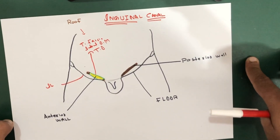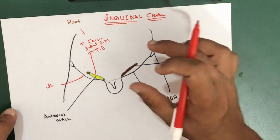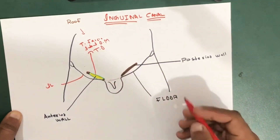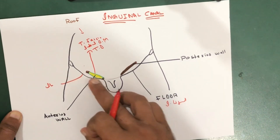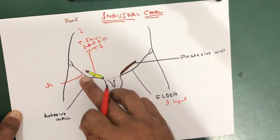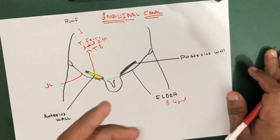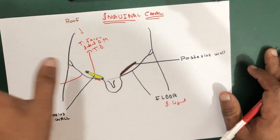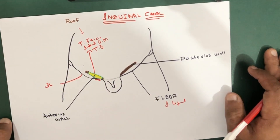So to summarize: the roof is formed by transversalis fascia, internal oblique muscle, and transversus abdominis. The floor is formed mainly by the inguinal ligament running all across the canal, and medially there is also the lacunar ligament, where the inguinal ligament is thickened.